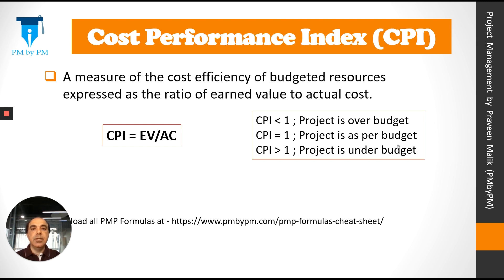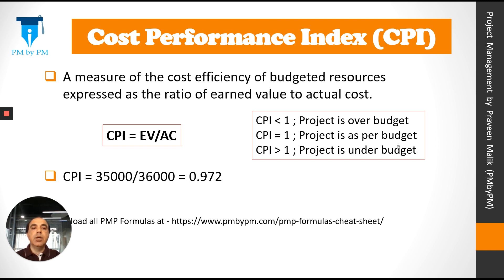Cost performance index is a measure of cost efficiency of budgeted resources, expressed as a ratio of earned value to actual cost. Just like cost variance, we have the cost performance index — but here we are measuring the ratio between EV and AC rather than the difference. For our example project, CPI comes out to be 0.972. A CPI less than 1 means the project is over budget, CPI equal to 1 means the project is as per budget, and CPI greater than 1 means the project is under budget.